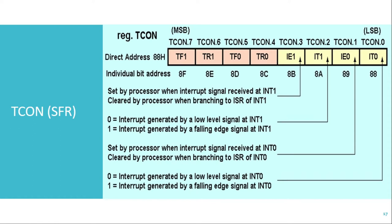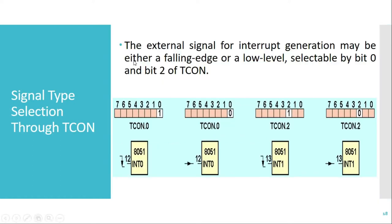Here is an example of how the signal can be configured for whether it will generate an interrupt on falling edge or on low level. The IT0 bit is available at the LSB position of the TCON SFR. When that bit is 1, a falling edge trigger on interrupt 0 pin will generate an interrupt. If that bit is 0, a low level signal will generate an interrupt on external interrupt 0 pin. For IT1, if it is 1 then a falling edge signal on external interrupt 1 will generate an interrupt; when IT1 is 0, a low level signal will generate an interrupt on external interrupt 1 pin.